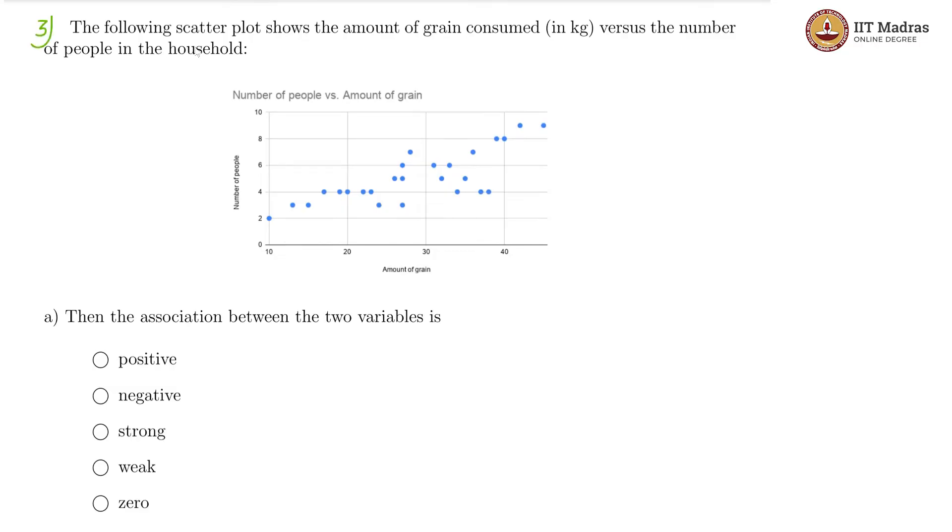Now, this is our third question. The following scatter plot shows the amount of grain consumed in kilogram versus the number of people in the household.